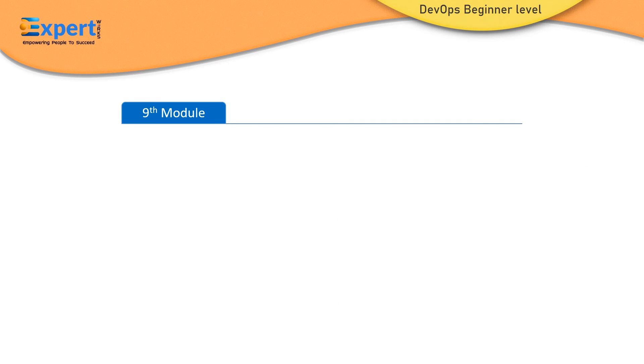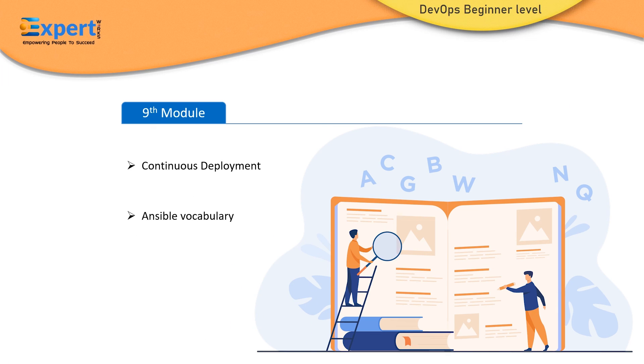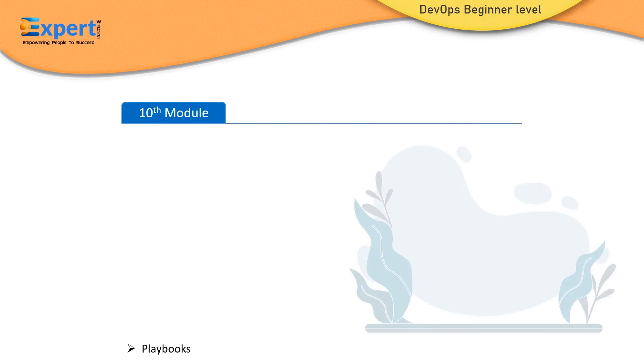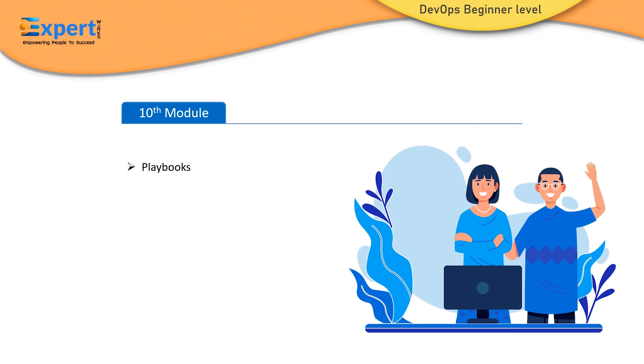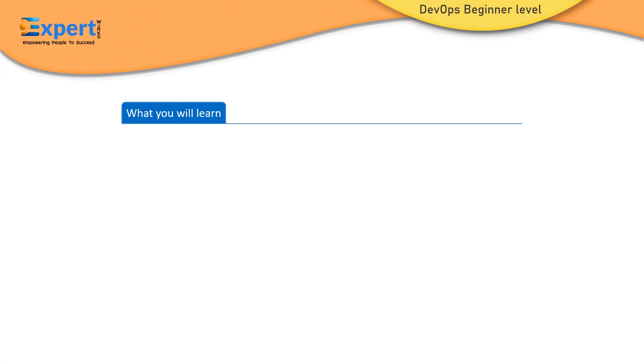The ninth module will discuss continuous deployment and Ansible vocabulary. In the tenth module, you will learn about playbooks, how to write a real-time playbook, and dry run. This course is very useful for building your foundation in DevOps.